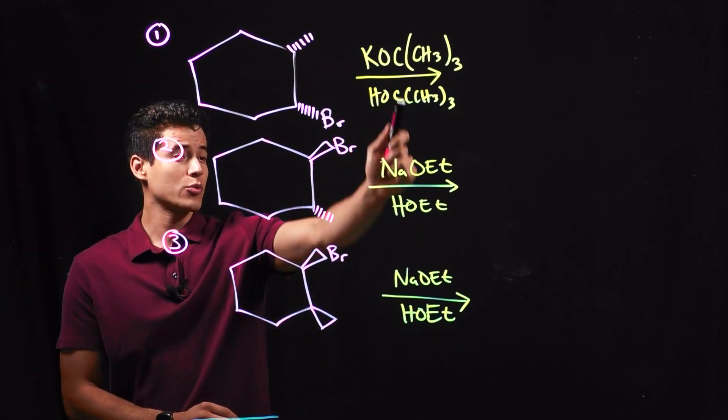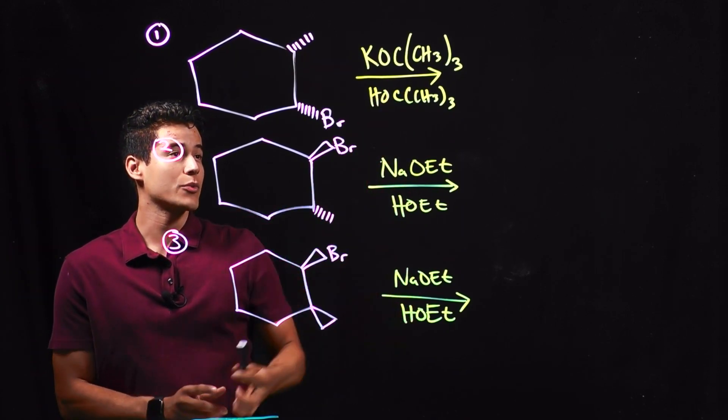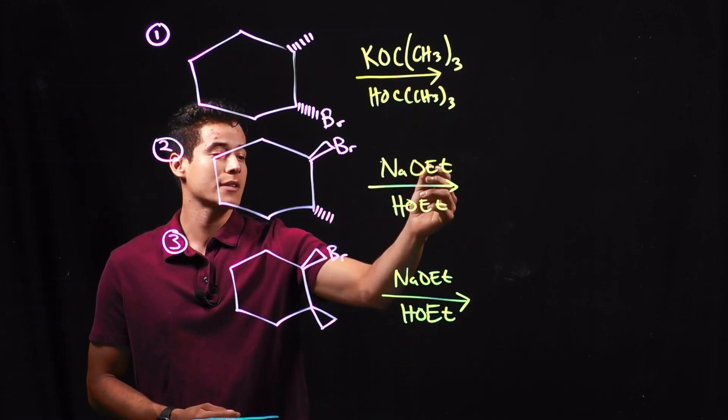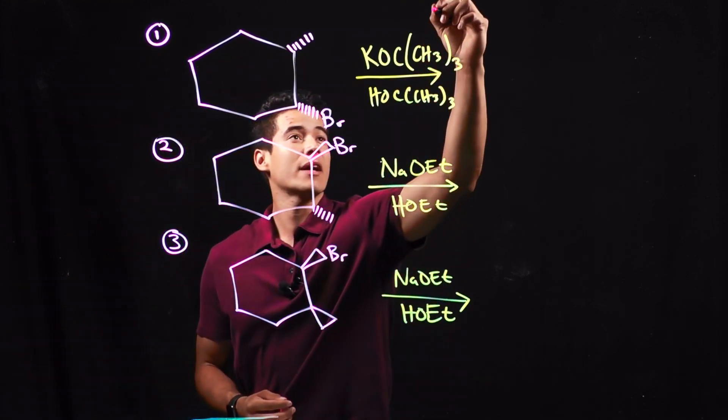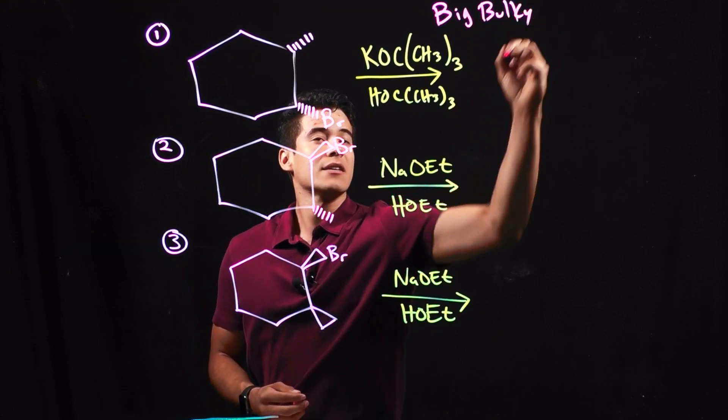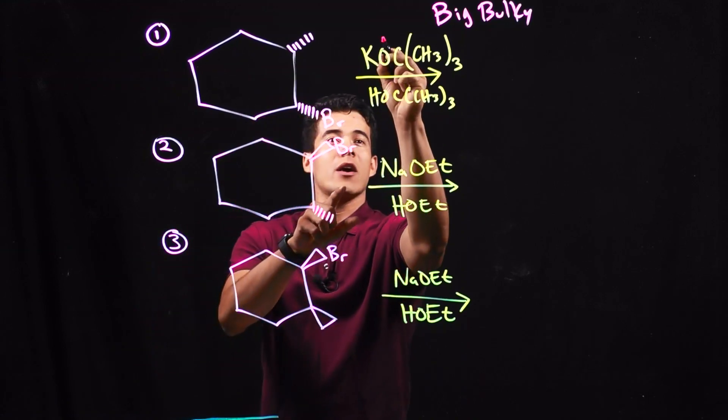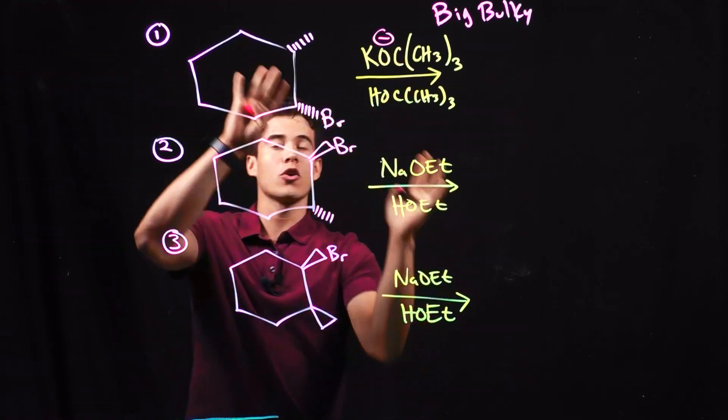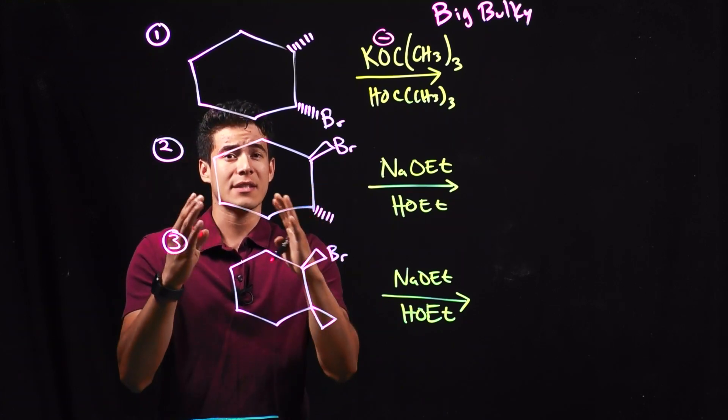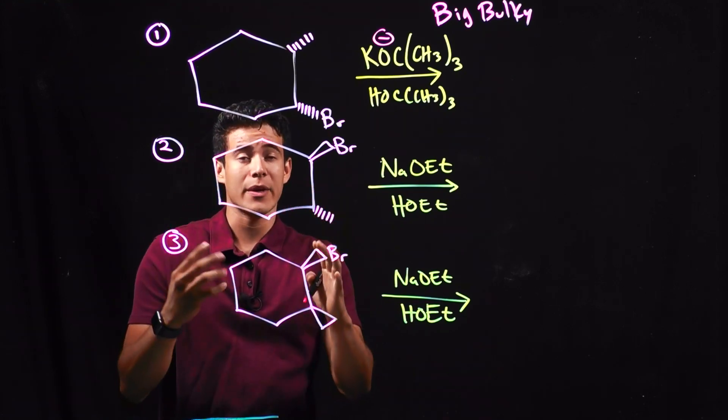Well, if we look comparing this one versus these two examples, we can see that this group here is going to be much bulkier than the groups down here. So I'm going to write that this is a big, bulky base. Because it's big and bulky, when my oxygen wants to go and attack a hydrogen, it's going to want to go for one that's not near any groups that are coming out of the board.